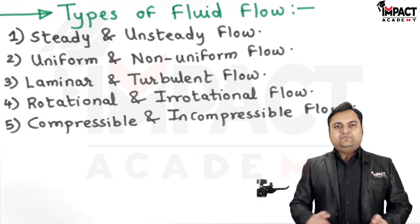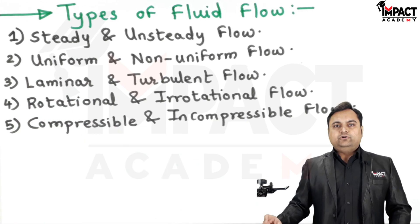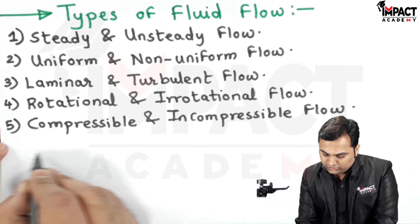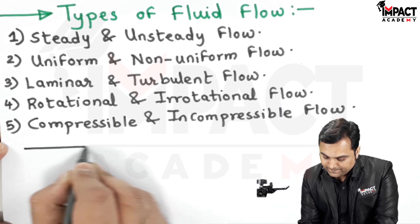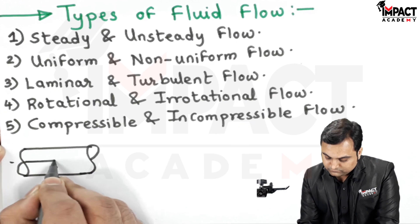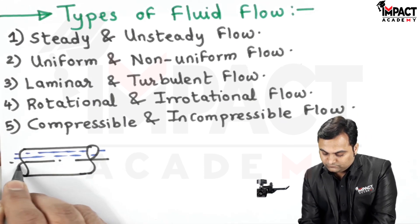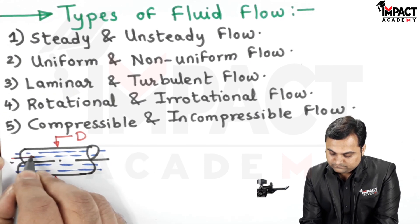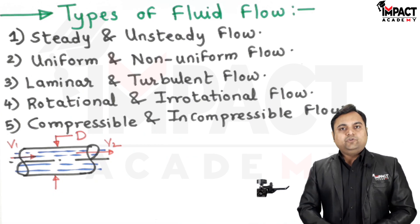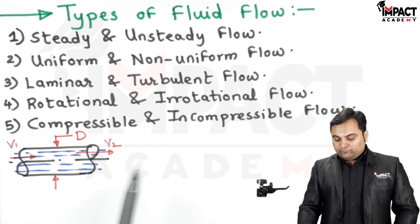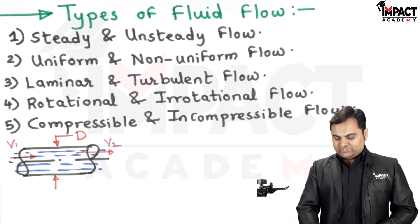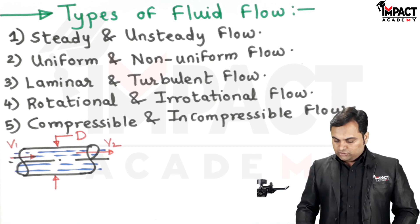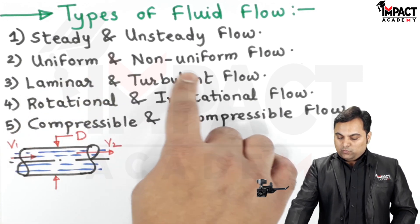Then there is uniform and non-uniform flow. In case of uniform flow, while flowing along the length of the pipe the velocity of the fluid remains constant. For example, when the fluid is flowing through a constant diameter pipe, the velocity remains constant in all directions, so that is considered as uniform flow.